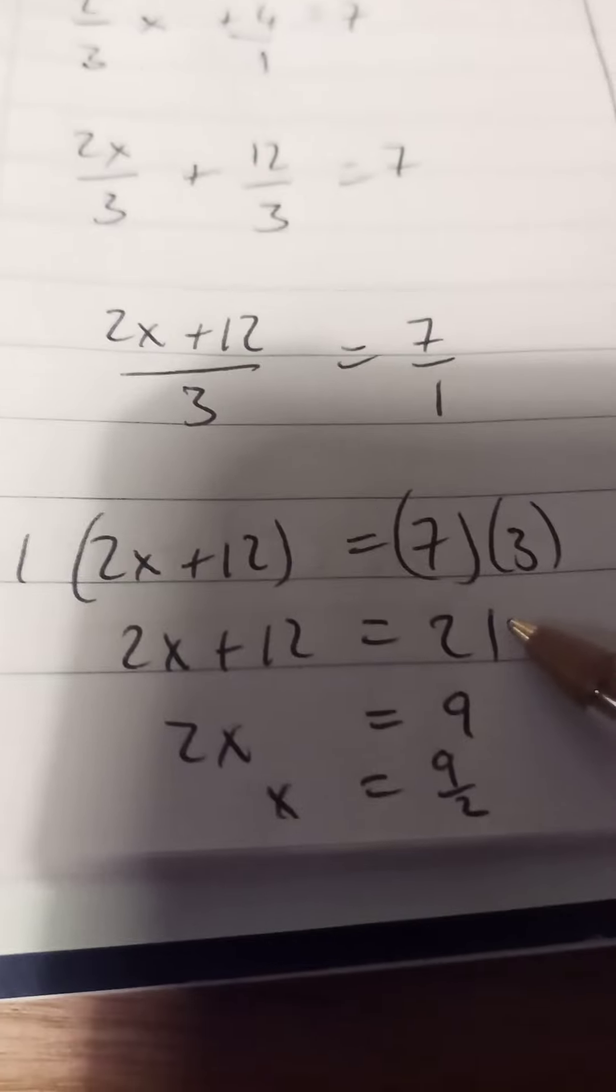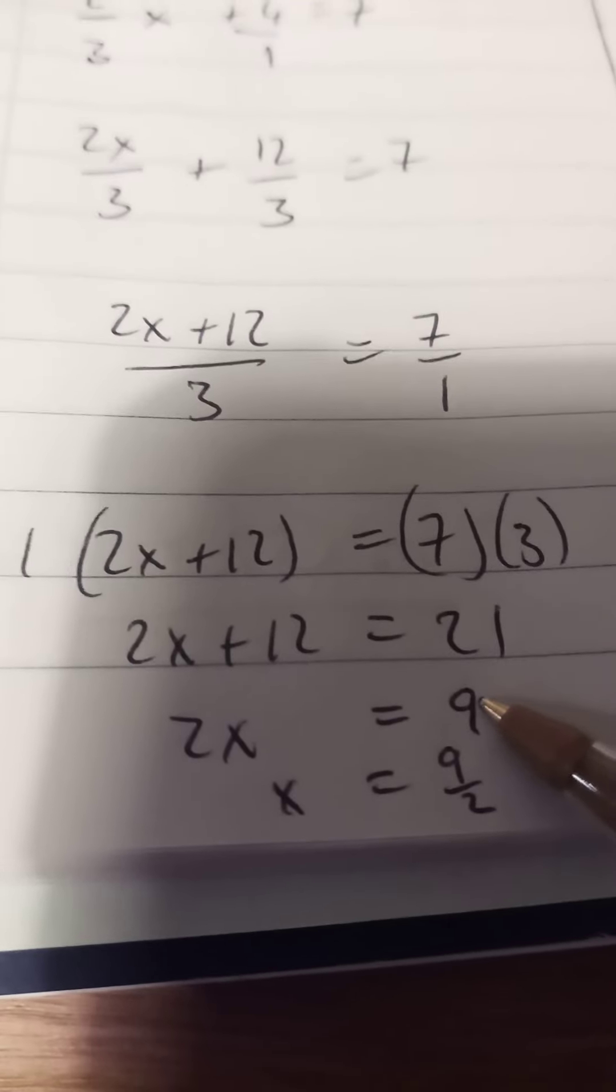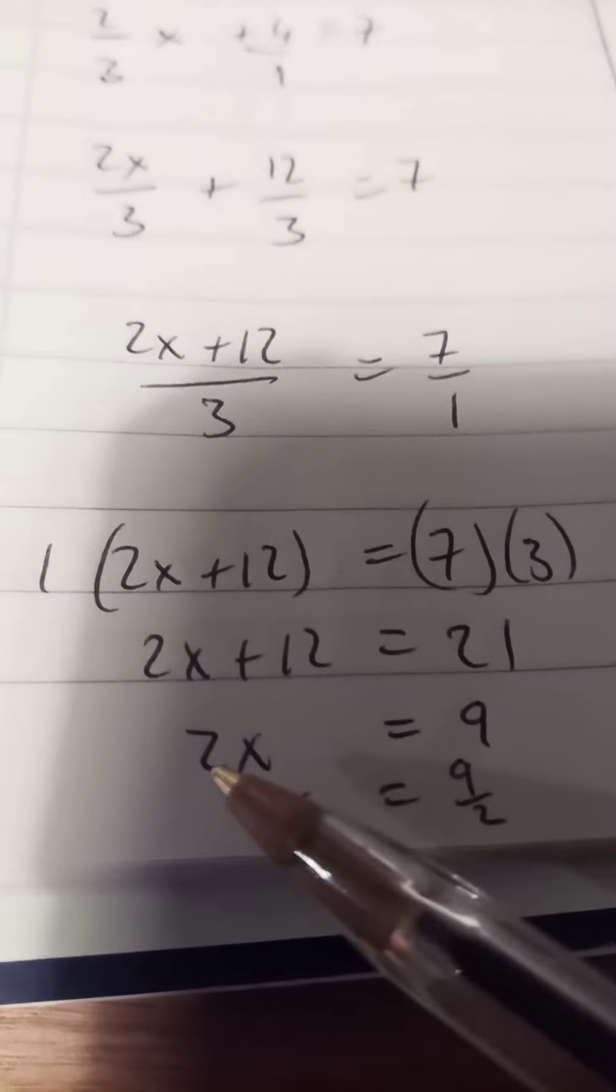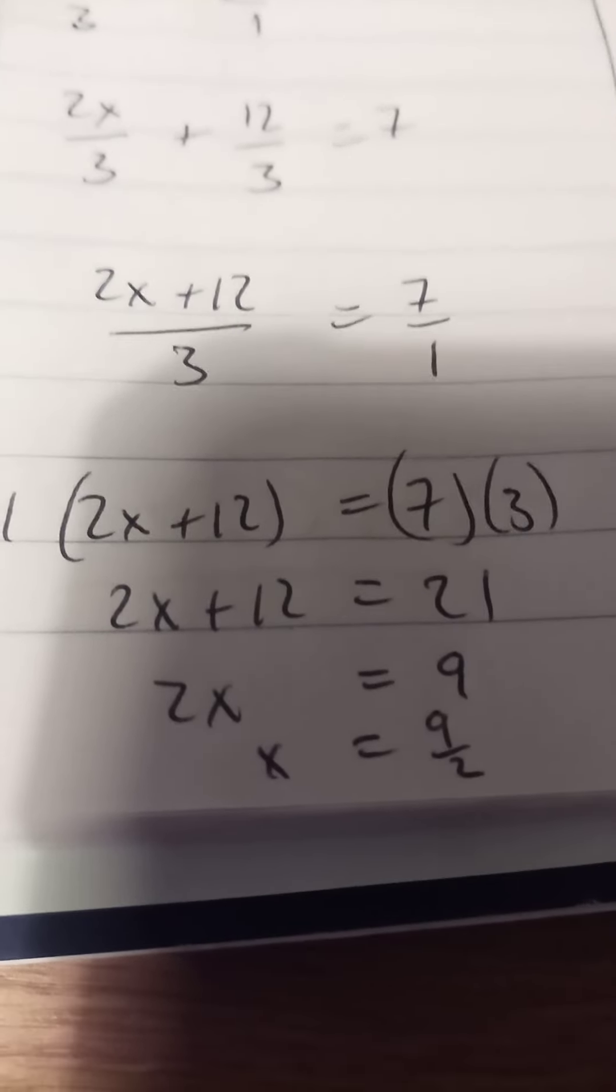Bring the 12 over, it becomes minus 12. 21 minus 12 is 9. If 2x equals 9, when I bring the 2 over it does the opposite, it goes under, so we get 9 divided by 2.